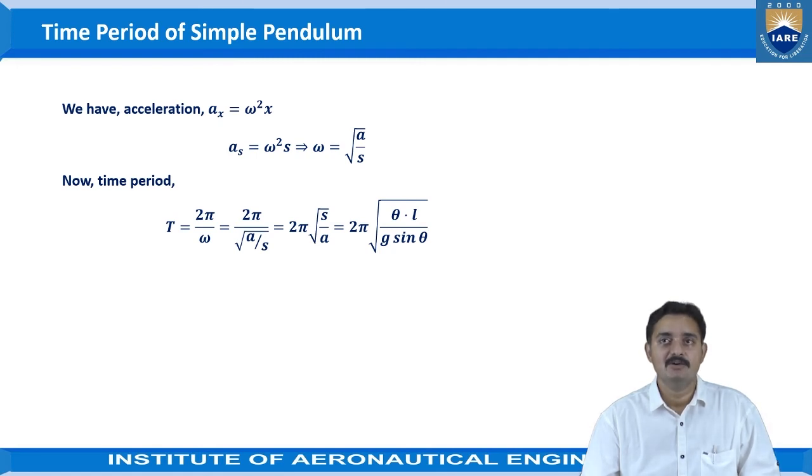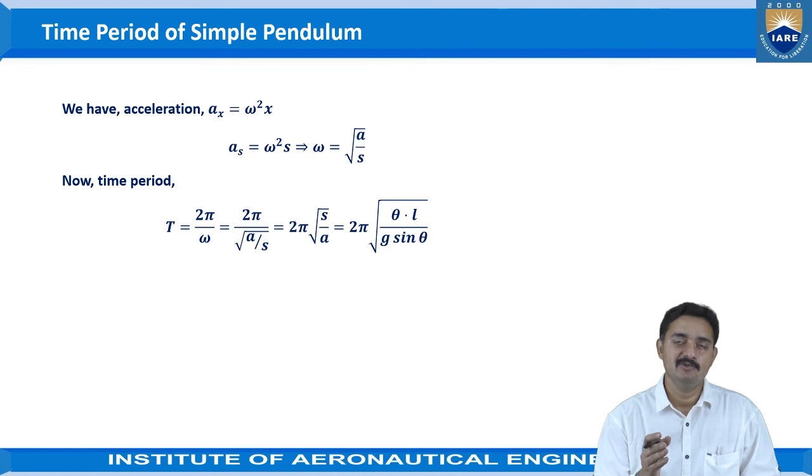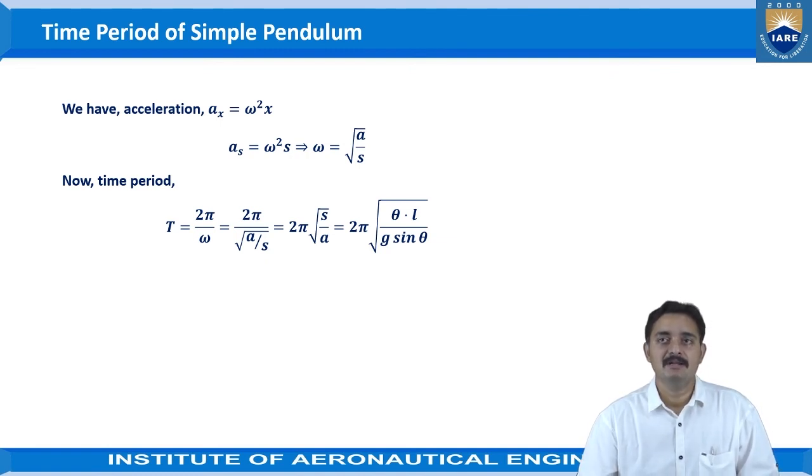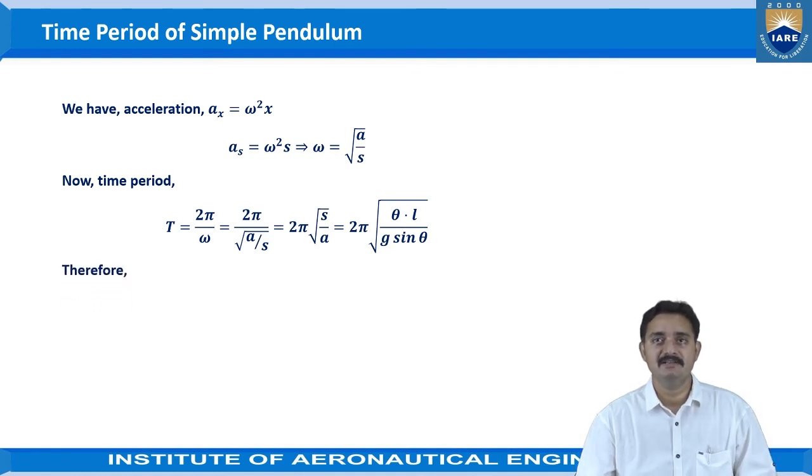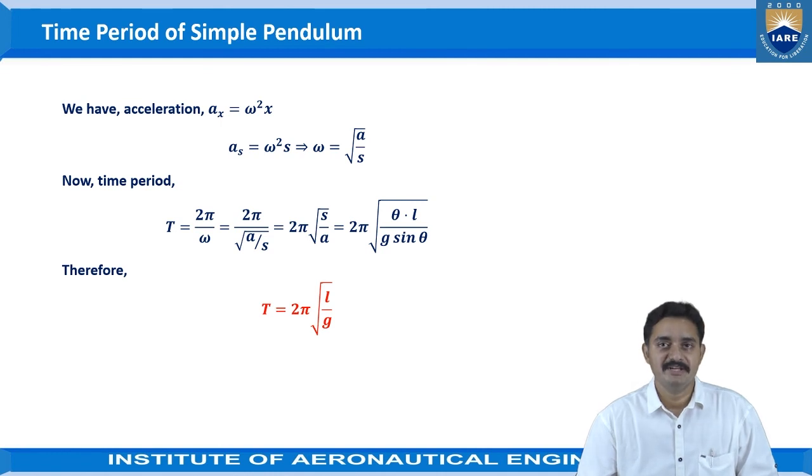Which we write as 2 pi under root s by a, that gives 2 pi under root theta into l by g sin theta. This s value and a value are taken from equations 1 and 2 previously which we have obtained. Therefore, the time period T of simple pendulum is given as 2 pi under root l by g.